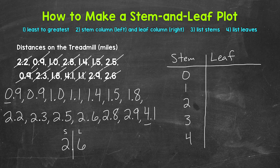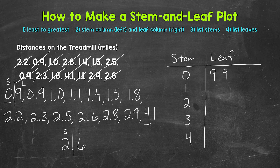Now we need to list the leaves, going in order starting with 0.9. Zero is the stem and nine is the leaf, so let's put nine here. Then we have another 0.9, so we need another leaf of nine. Then we move to 1.0 — stem of one, leaf of zero. Then 1.1 — stem of one, leaf of one. Next we have 1.4, so we need a leaf of four.